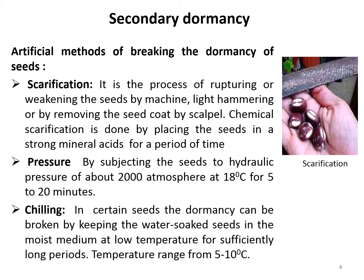The following methods are used for breaking the dormancy of seeds. The first one is scarification. It is the process of rupturing the seed coat by mechanical or chemical means. Mechanically, it is done by threshing the seed by machine, light handling, or by removing the seed coat. Chemical scarification is done by placing the seeds in a strong mineral acid for a very brief period.